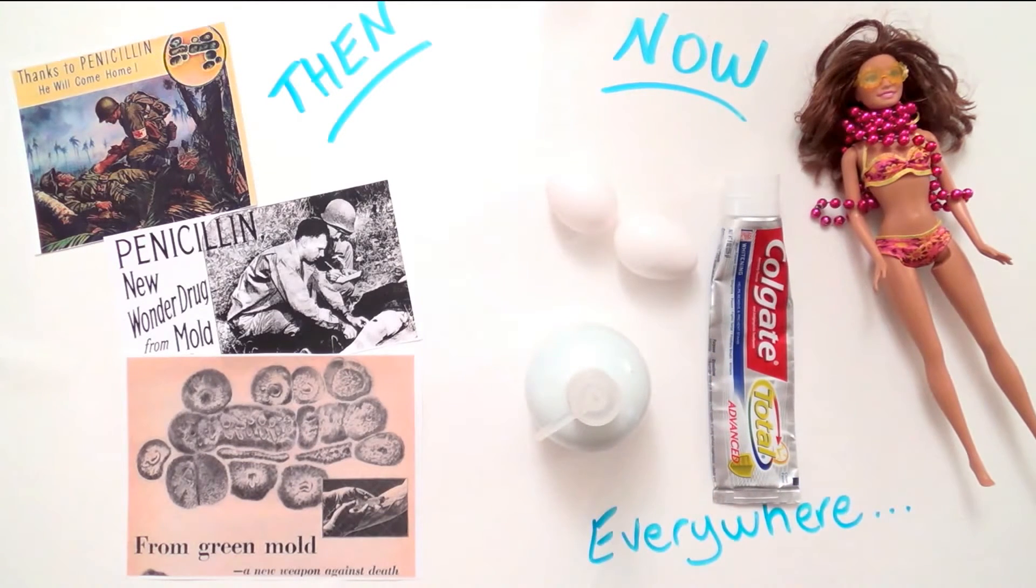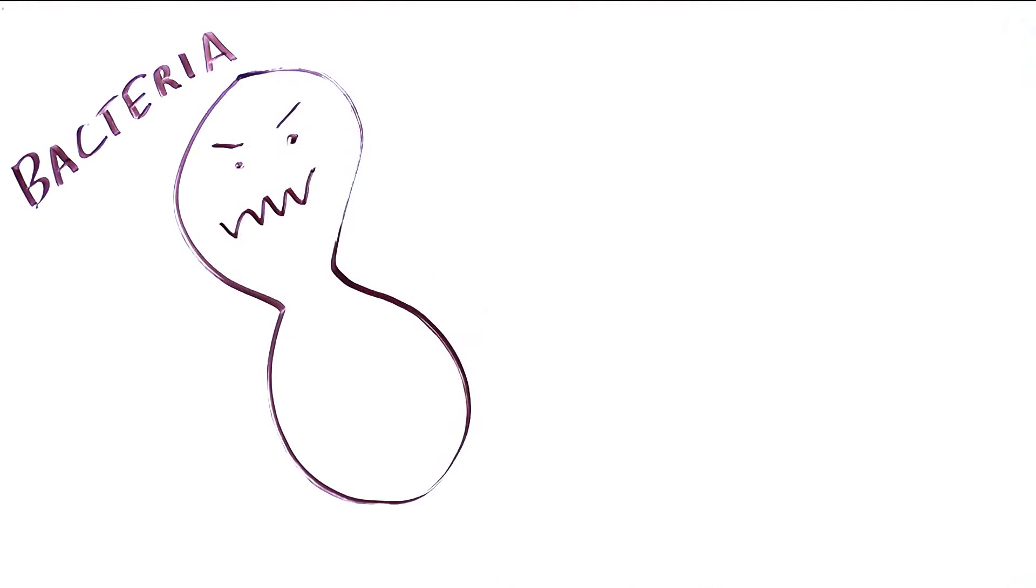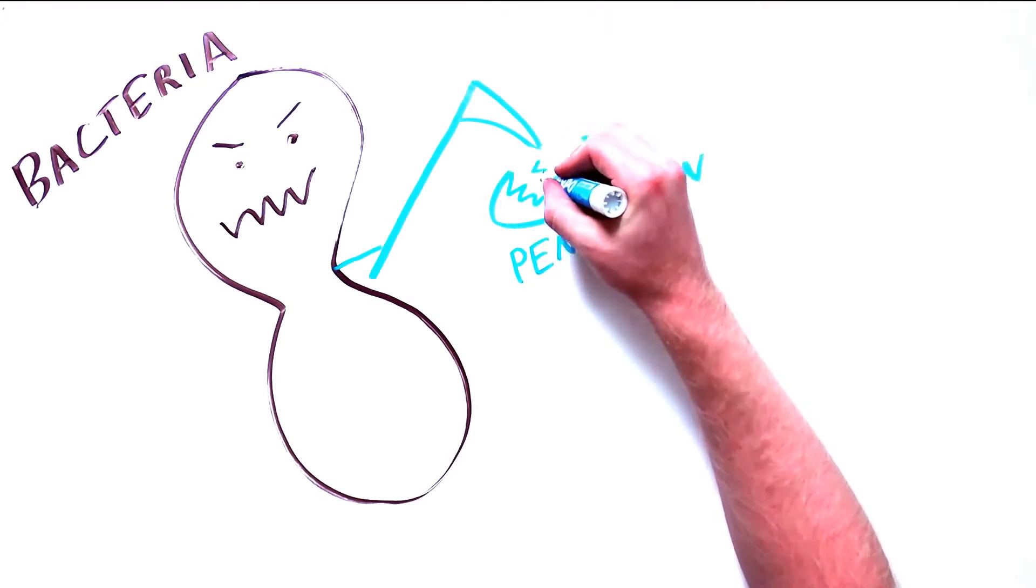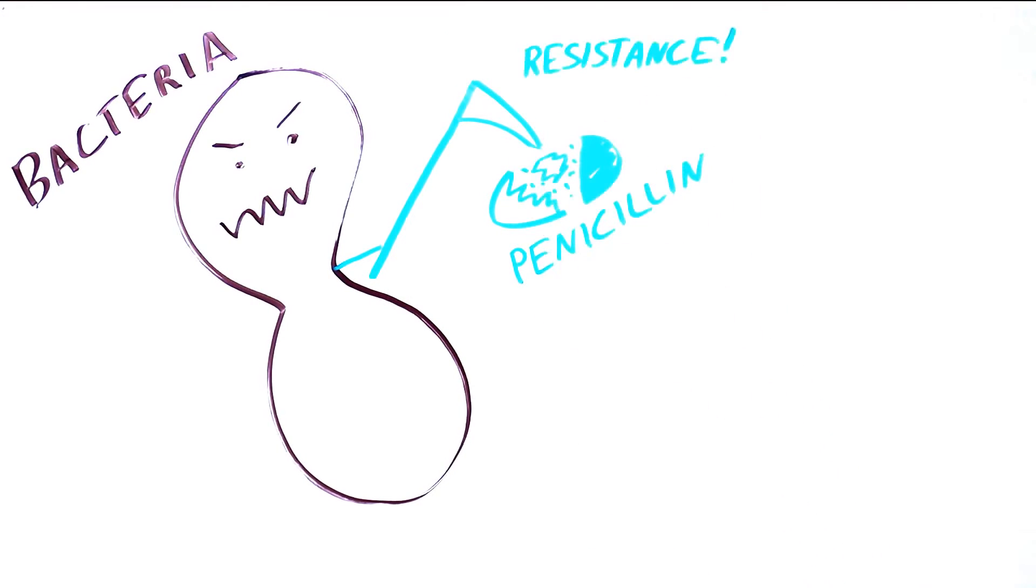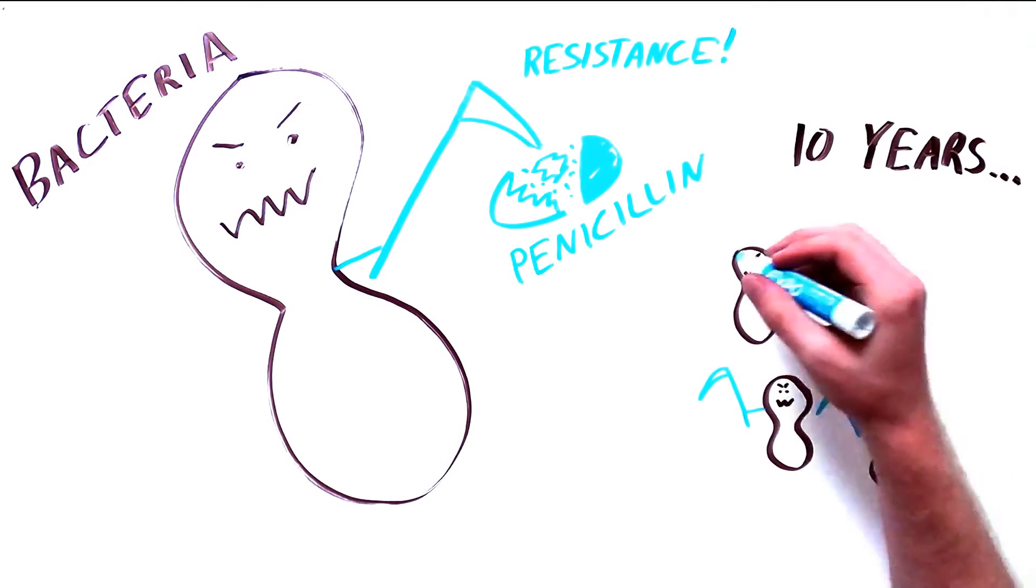Around the same time as penicillin was isolated, scientists had their first encounter with antibiotic resistance. A bacteria was discovered that could destroy the new wonder drug. Within 10 years, penicillin resistance was widespread, and people wanted a solution.